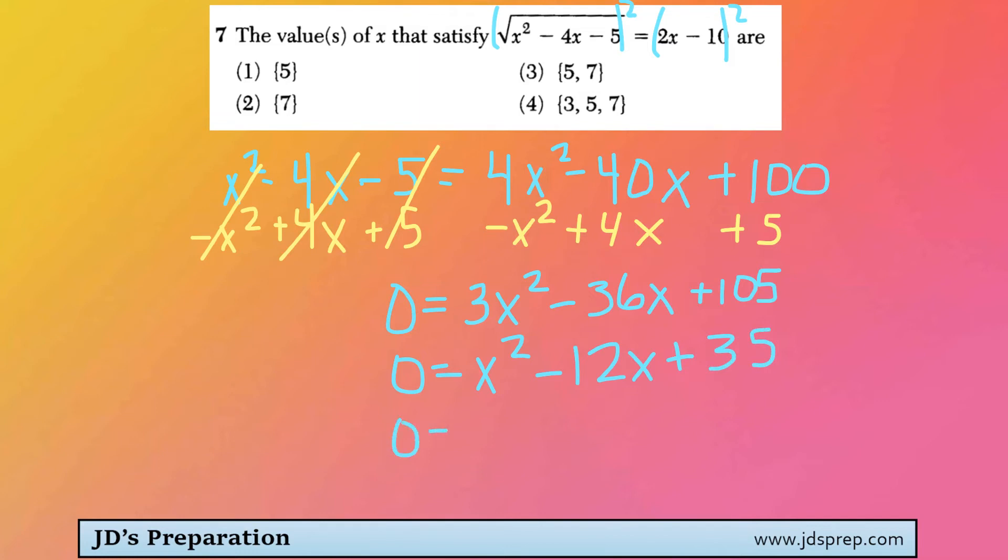All right, now we can factor this. So we're going to look for two numbers whose product is positive 35 and their sum is negative 12. So I'm thinking 7 and 5, 7 times 5 is 35. And then if we make them both negative, then their sum would be negative 12. Great, so this means that we've solved the equation and x equals 7 and 5.